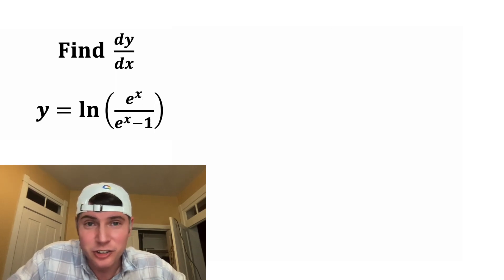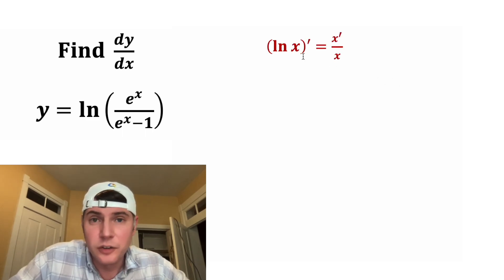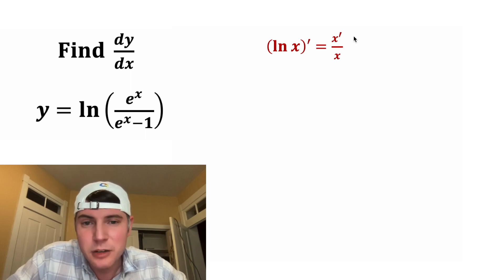So we've got three things going on here: log derivatives, quotient rule, and chain rule. So first log derivatives, if you're taking the derivative of the natural log of x, that's going to be equal to the derivative of x over x.